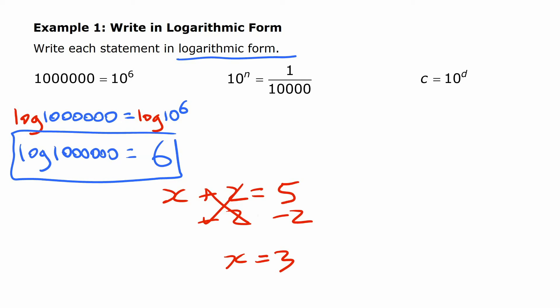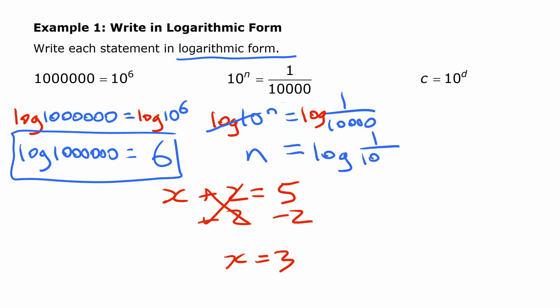We can do the same thing with the next one. If we want to eliminate this exponential expression — this is one over ten thousand — we take the logarithm of both sides. If the equation was true before and we do the same thing to both sides, we get a new one that is also true. Log of ten to the power of something is just that something, and on the other side we have log of one over ten thousand. That's the same thing in logarithmic form.